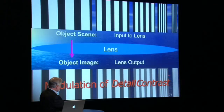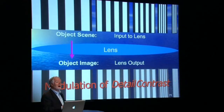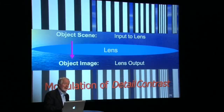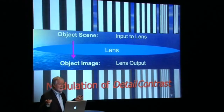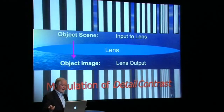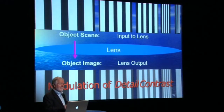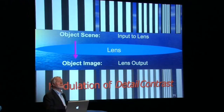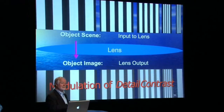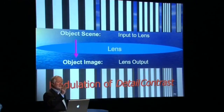So you put enough of them in, you get this profile — or this modulation of the transfer of contrast — hence modulation transfer function. MTF is a measurement of how contrast is passing through the lens as it changes its spatial detail.